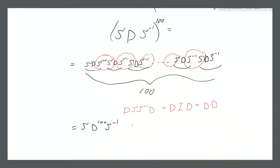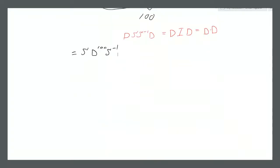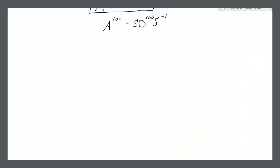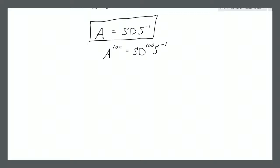So what we'll have as a result is S times D to the power of 100, and then S inverse. And because D is a diagonal matrix, raising it to the power of 100 or to any power is rather simple. So if we know that A equals S D S inverse, then we can do A to the power of 100 quite easily — that's just S times D^100 times S inverse. The first thing we need to do is find the eigenvalues and eigenvectors of A.